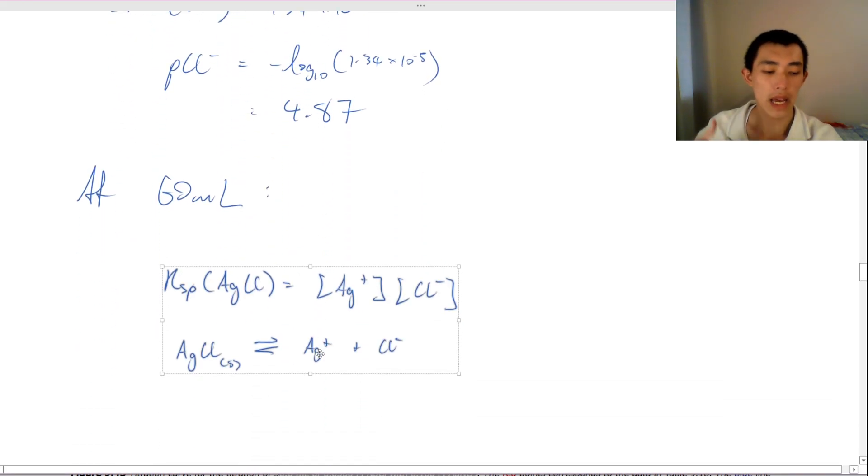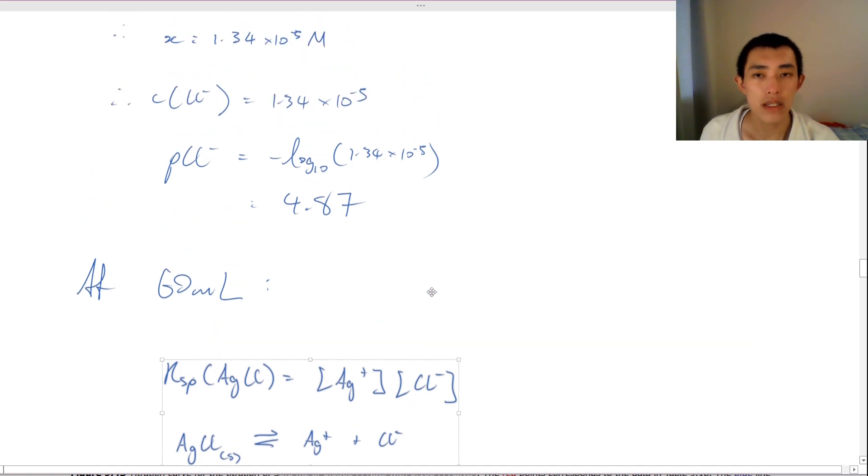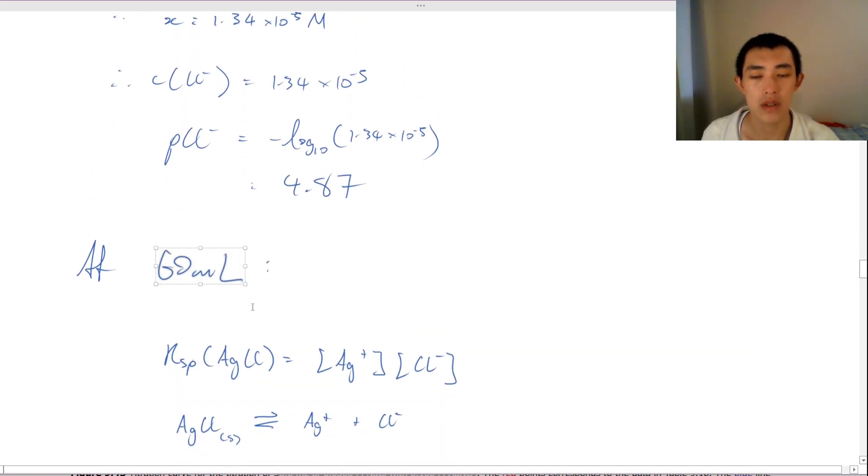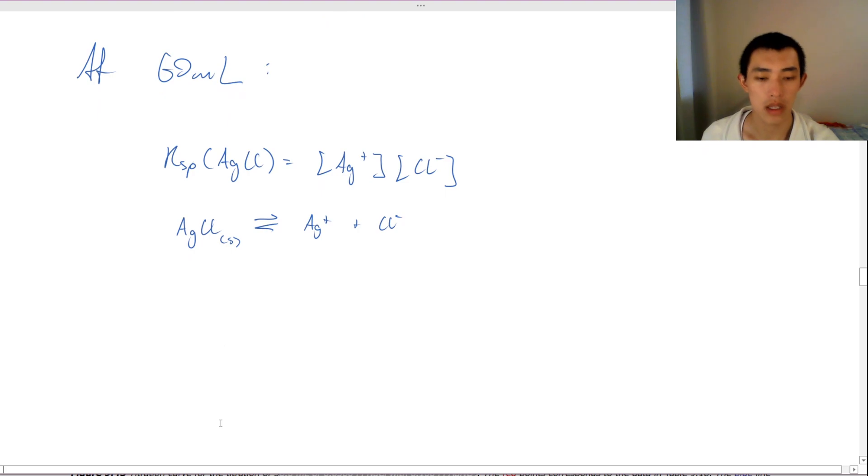So, when we were at equivalence point, the silver and the chlorine were exactly matched together. But now, when we have 60 milliliters, we're going to have an excess of one thing and so we're going to have some common ion effect going on. So, let's have a think about, at 60 milliliters, what is going to be the concentration of my silver.